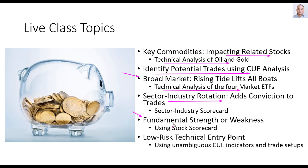The third step is to look for stocks with fundamental strength or weakness aligned with those industries. If the industry is bullish, I look for fundamentally strong stocks; if bearish, I look for fundamentally weak stocks. Once I have a strong market, bullish industry, and strong fundamental stock, the last step is finding a low-risk technical buy point. If all factors are weak, I look for a technical short point using unambiguous Q indicators and trade setups.